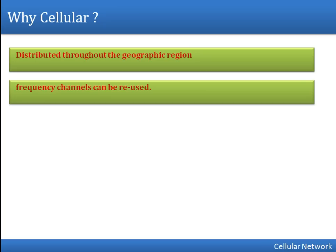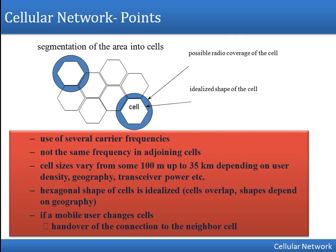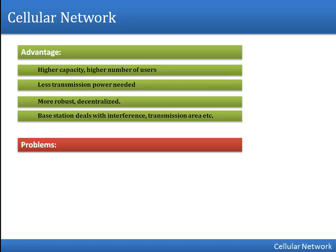Frequency reuse is a very big advantage of cellular networks and it is distributed throughout the geographic region. There is no single transmitter handling all traffic — there are multiple base stations with no single central control. Several carrier frequencies are used, not the same frequency in adjoining cells. A frequency used in one cell can be reused in another cell far enough away so there is no interference. The hexagonal cell shape is idealized. If a mobile user changes cell, there will be a handoff or handover.